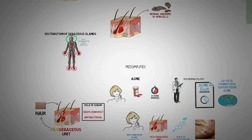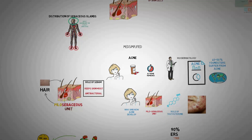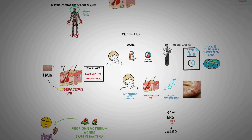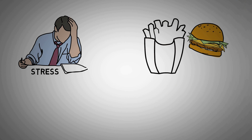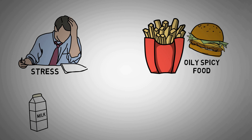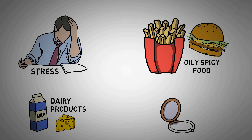Now, by that logic almost 100% of people should have acne since males have high testosterone at puberty and females also have hormones like DHEAS and testosterone. But there are many other factors that determine whether you will develop acne or not. Some are clearly known — for example, stress, oily and unhealthy foods, dairy products, skipping meals, and cosmetics are well-known exaggerating factors for acne development.